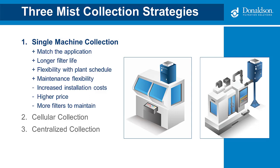The first strategy involves a single machine connected to a dedicated mist collector. This is the most commonly used strategy because it allows flexibility in how the mist collector can be mounted — directly to the machining center eliminating ductwork, or in close proximity using a short duct run. Advantages include matching the application with the correct technology, the ability to move equipment as the process changes, only using the mist collector when the machine is in use, easier coolant reclaim draining right back to the machine's coolant reservoir, and easier maintenance. The downside is a higher price for multiple individual units and potentially more filters to maintain.